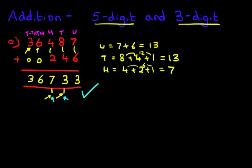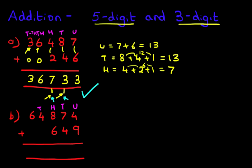Okay, let's look at one more example. This time we'll have a bit more carrying. We've got 64,874 plus 649. Let's put a nice big equal sign. Let's label the columns again. We don't have to, but it's good practice. Units, tens, hundreds, thousands, and ten thousands.